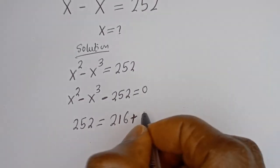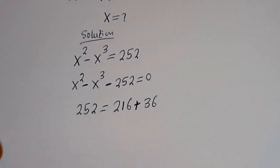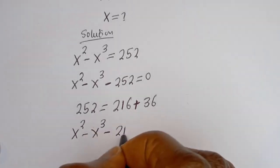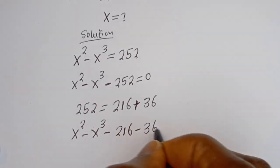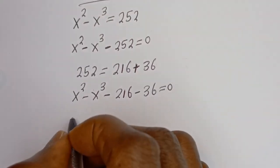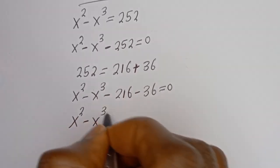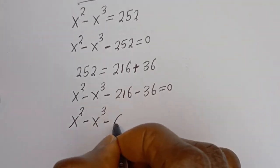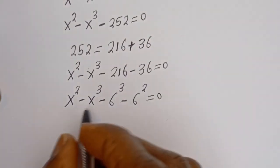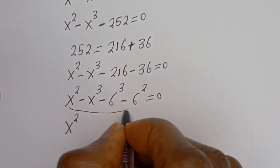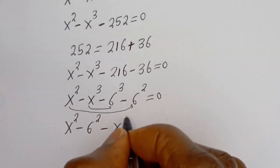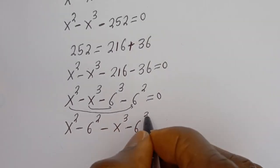We note that 252 equals 216 plus 36. So we rewrite the equation as s squared minus s to the power of 3 minus 216 minus 36 equals 0. Grouping terms: s squared minus 36, which is 6 squared, and minus s to the power of 3 minus 216, which is 6 to the power of 3, equals 0.